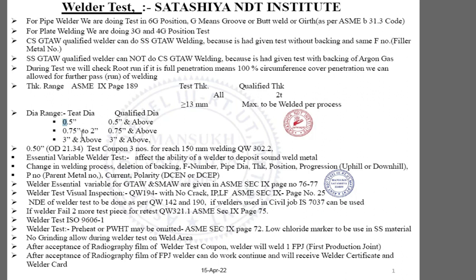If a welder has done welding tests on 6 inch and 2 inch pipe, he cannot do welding on half inch, because for half inch he has to test again on half inch pipe. Half inch is a very tough position because during the test the welder's hand movement is required to change very frequently, and skip also. Not all welders can do welding of half inch.